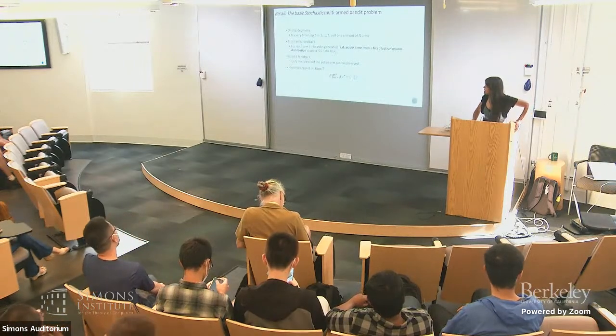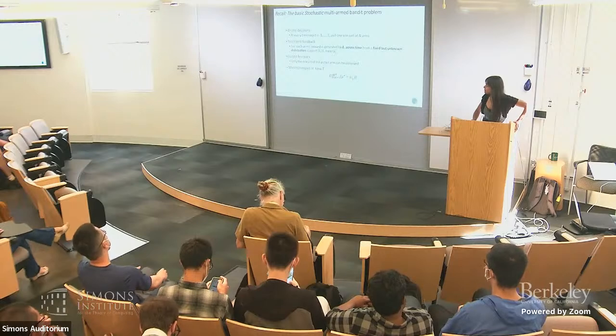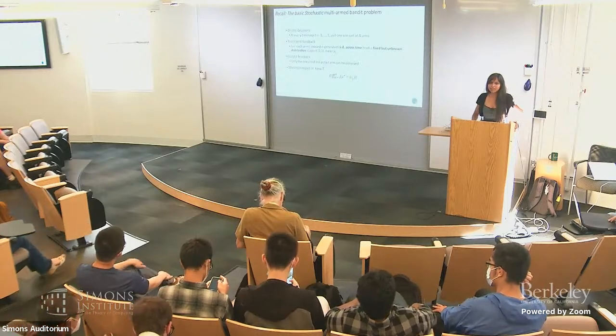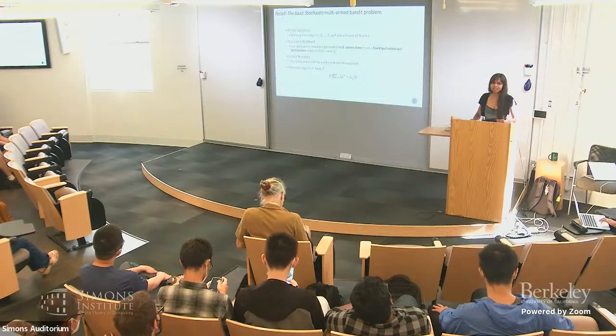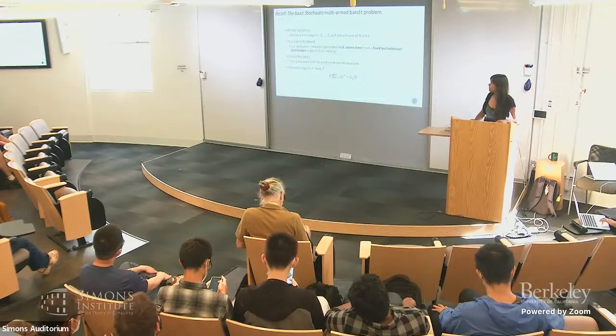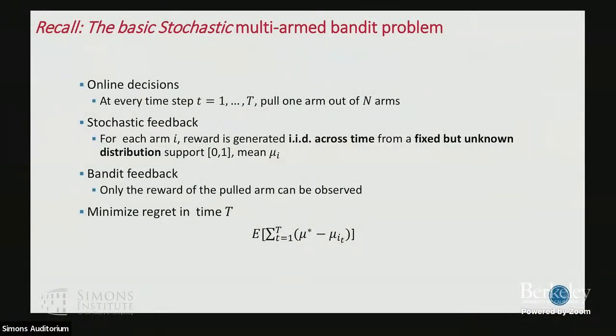In the last lecture, I talked about the basic stochastic multi-armed bandit problem, where we put a lot of restrictions: we can only pull one out of N arms, we only learn about the arm we pull, and the reward is IID from a fixed distribution that doesn't change.